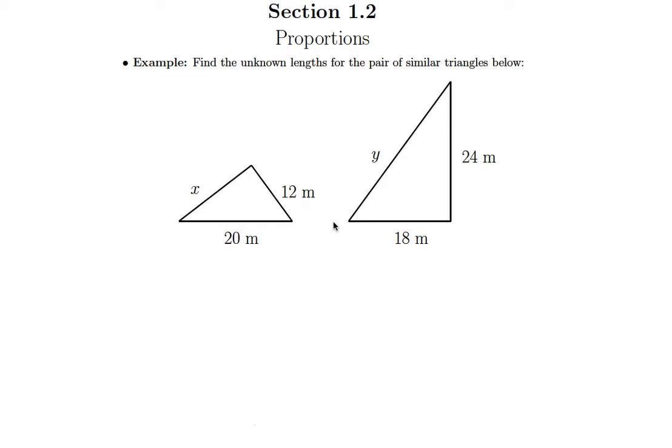In this lesson we're doing an example similar to the previous video, but here we're going to find two different unknowns amongst two different similar triangles.